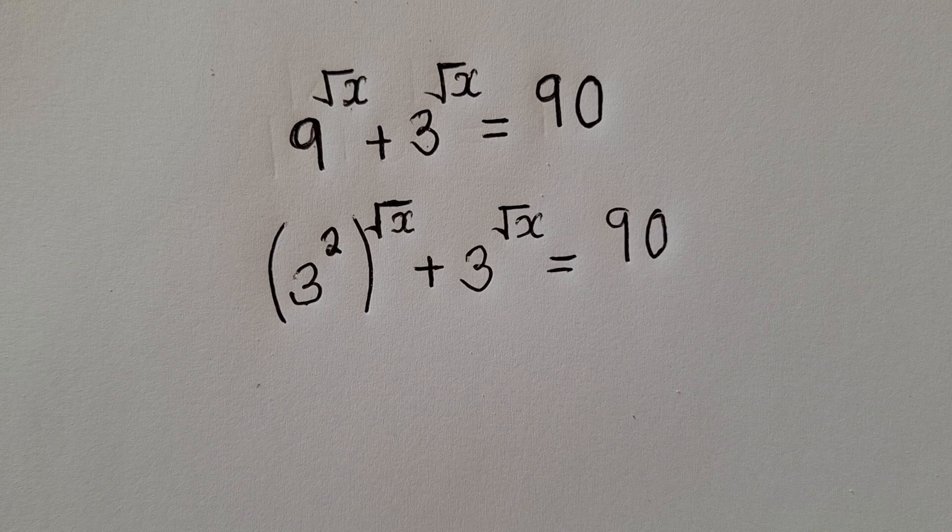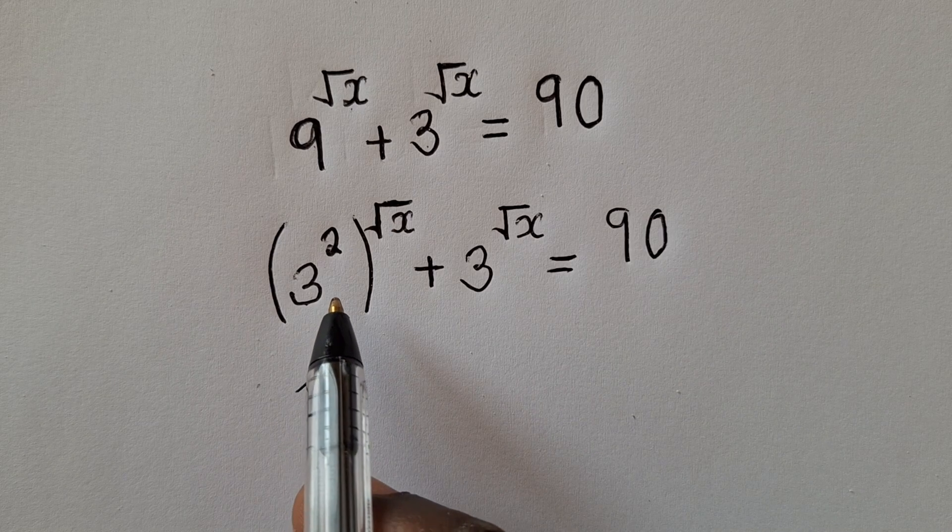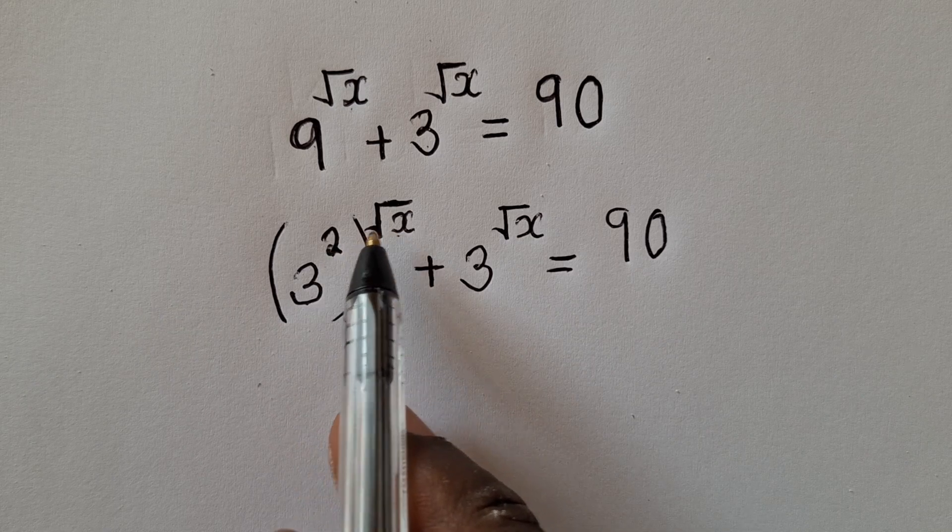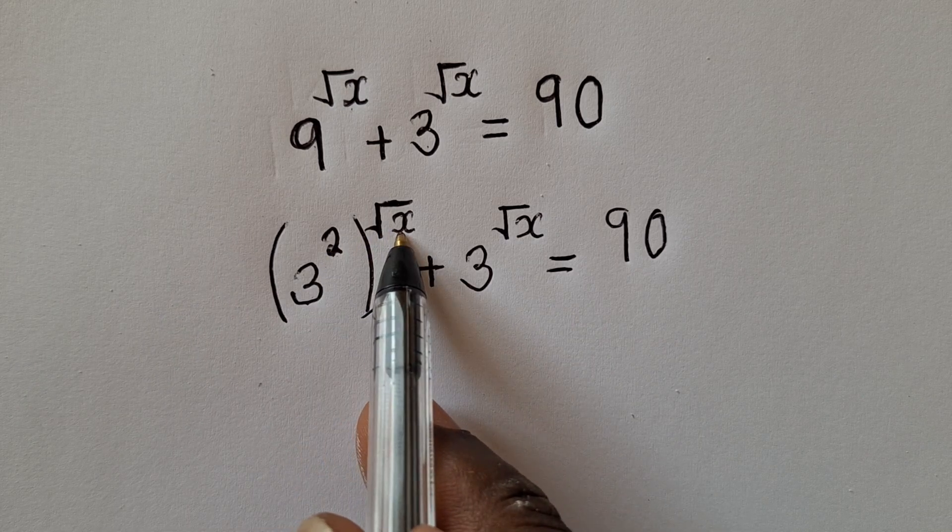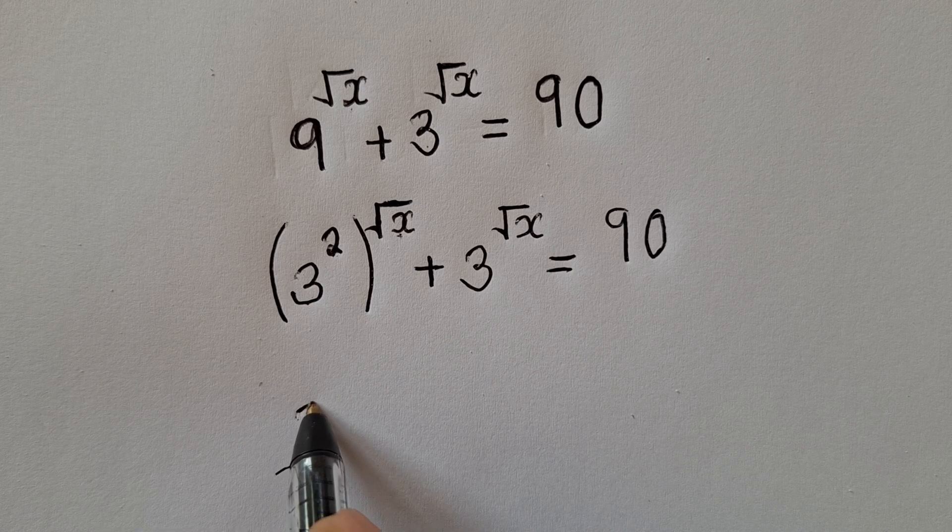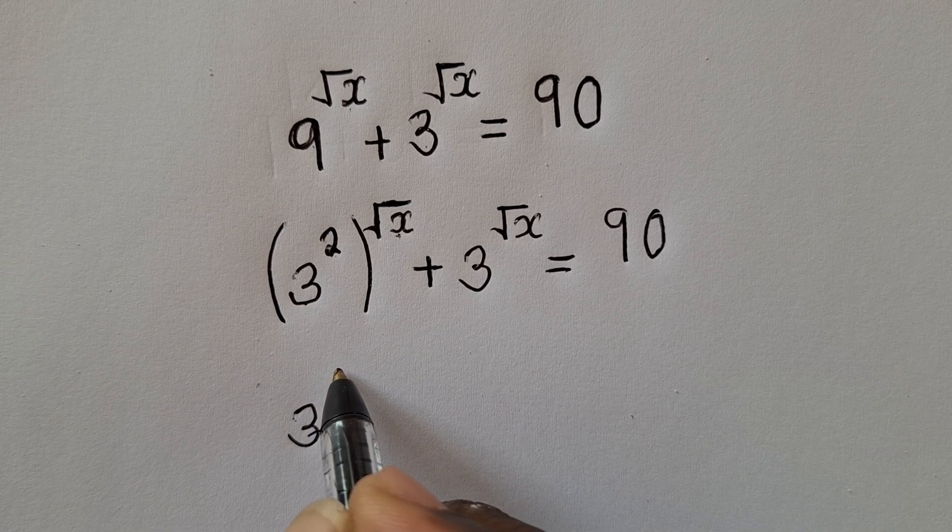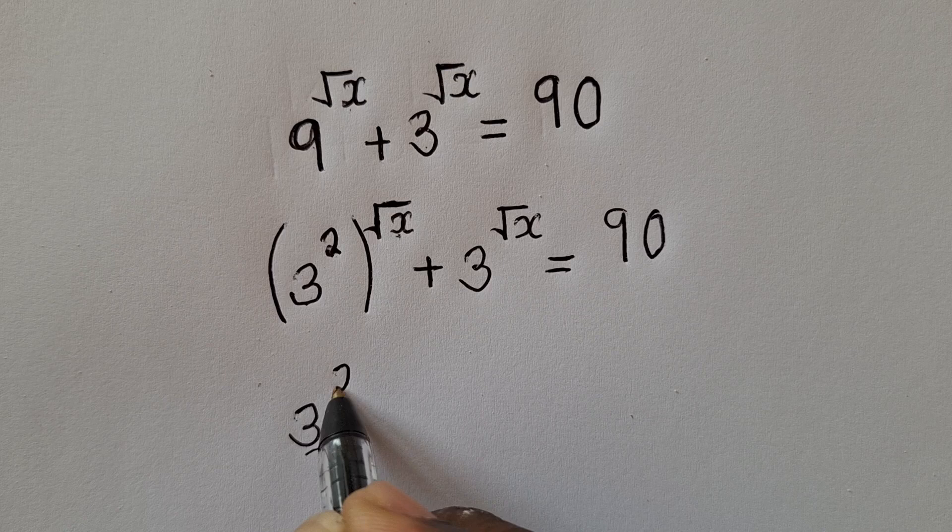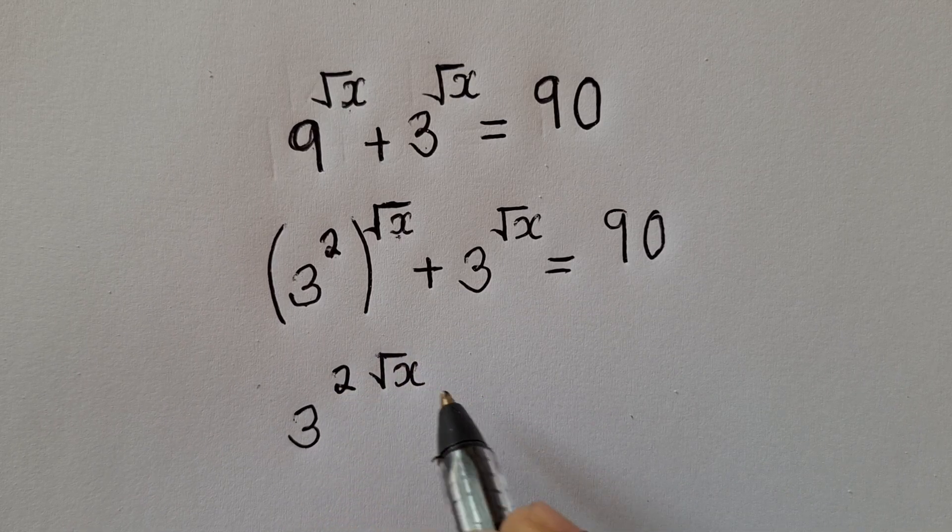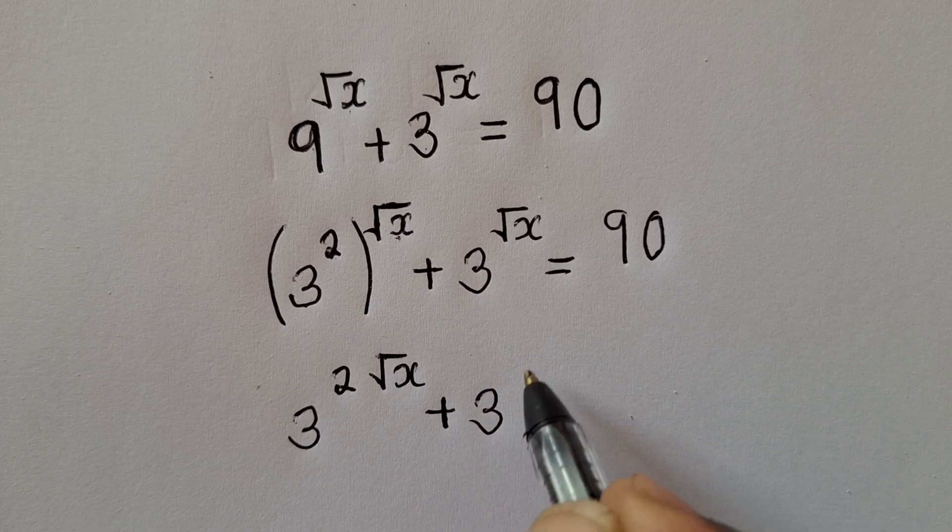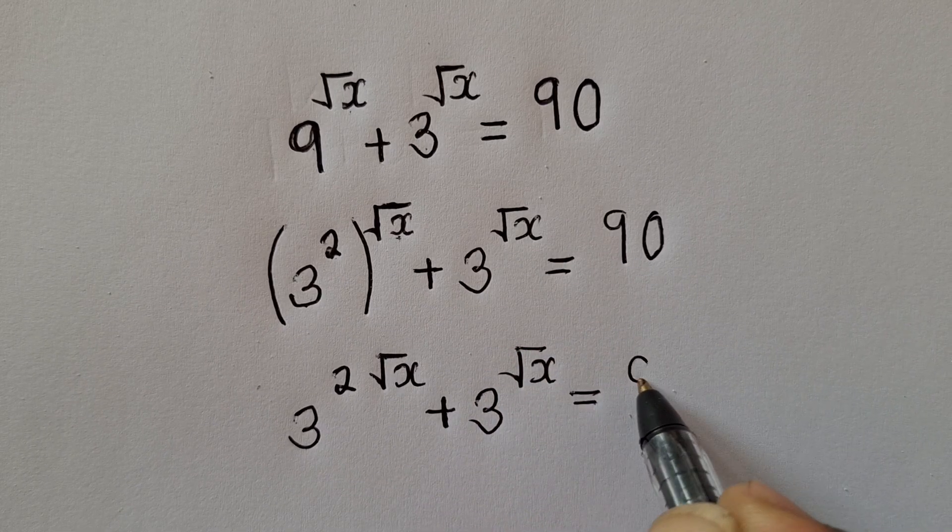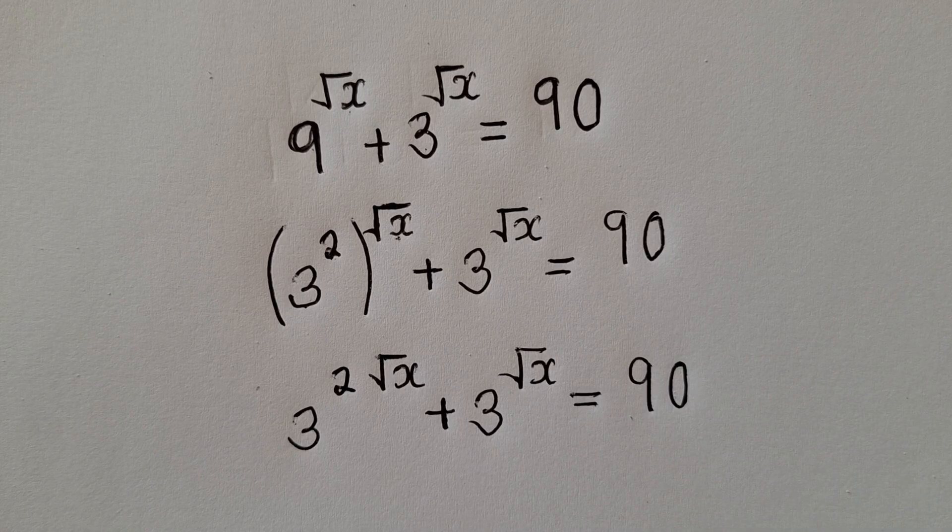After writing this, there is a property which must be applied which says that power to power you multiply. So this can be 3 power 2 square root of x plus 3 power square root of x is equal to 90.